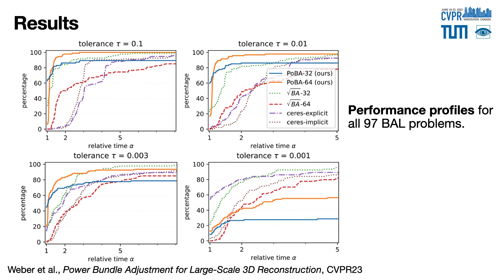The performance profiles encapsulate the percentage of BAL problems (Y axis) solved faster than a relative runtime alpha (X axis). For each performance profile, a curve higher on the left means better runtime and higher on the right means better accuracy. The smaller tau is, the more accurate the cost objective to reach. Taking the 1% tolerance as an example — meaning medium accuracy — we see that our solver POBA clearly outperforms all other solvers, meaning that POBA is much faster.